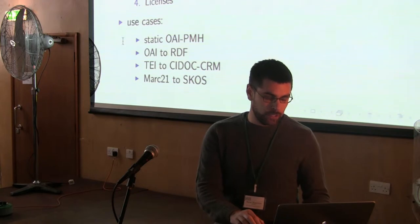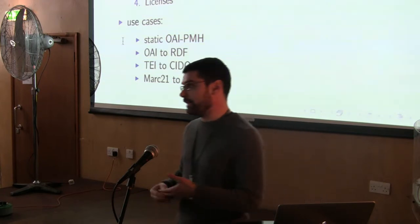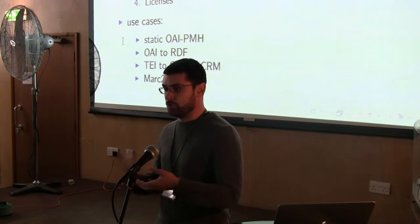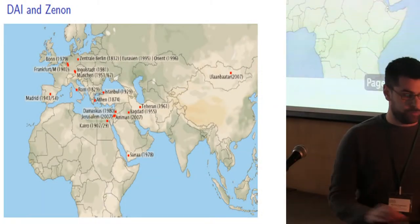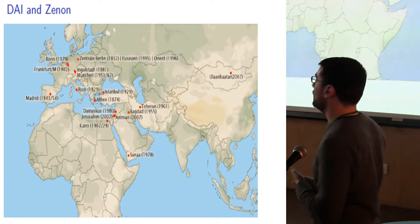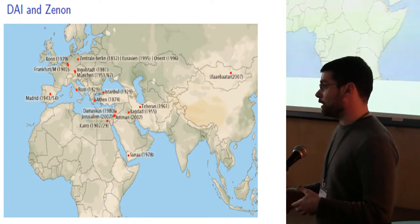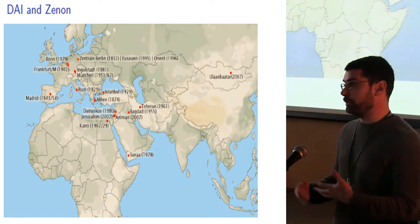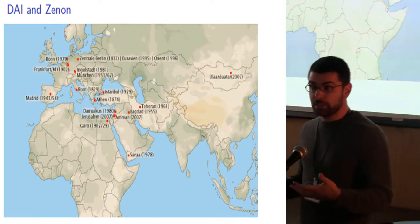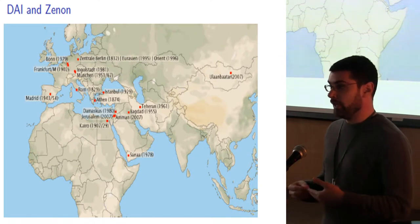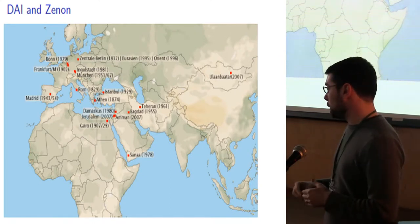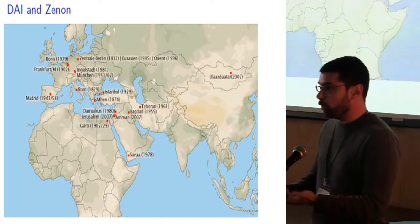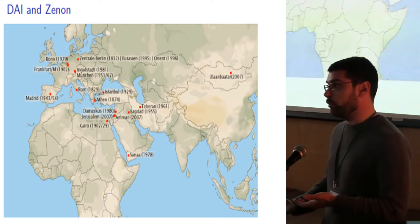To exemplify this, we developed some use cases. The one I'm talking about today is how to transform a legacy data thesaurus into a more semantic thesaurus. I will first talk briefly about what Zenon is — which is the OPAC of the German Archaeological Institute, the electronic catalog of libraries — and there are 13 libraries contributing to it. It's a growing set of data, and currently there is a million records. To make sense of this messy set of data, we need a thesaurus to keep it in order, but also to allow people to access it and find what they are looking for.